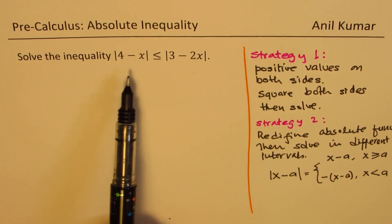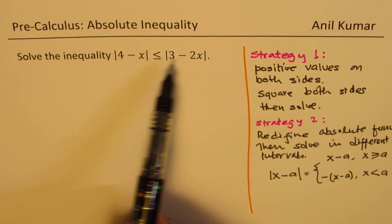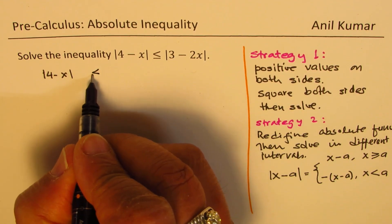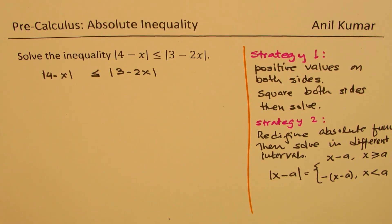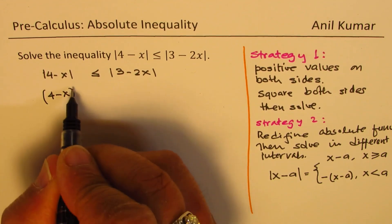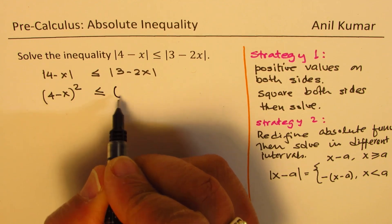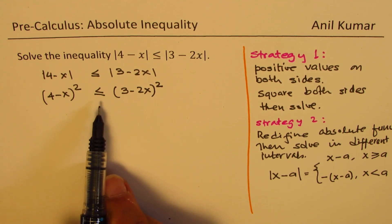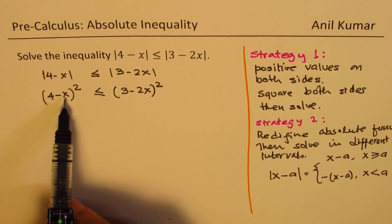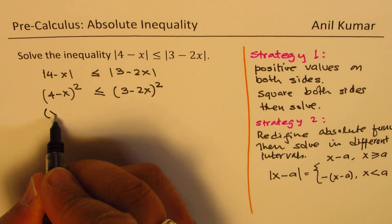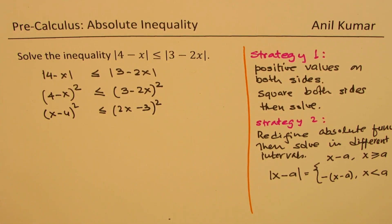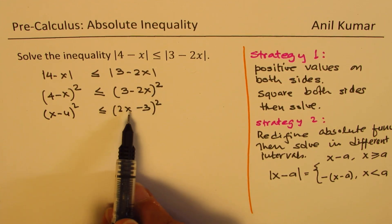Let's adopt Strategy 1. We can use it because both sides are always positive. So when we say absolute value of 4 minus x is less than or equal to absolute value of 3 minus 2x, we can equivalently say (4 minus x) squared is less than or equal to (3 minus 2x) squared. I prefer to write x first, so I rewrite this as (x minus 4) squared less than or equal to (2x minus 3) squared — that is one and the same thing, because a square of a negative is positive.